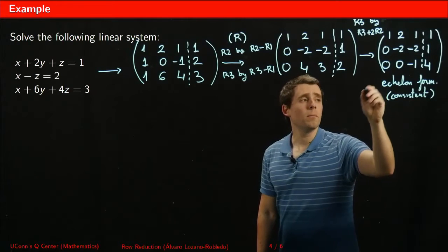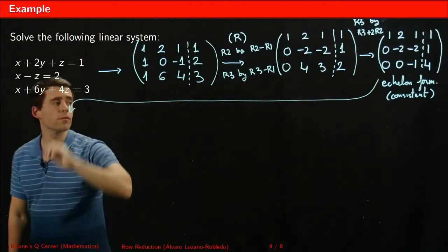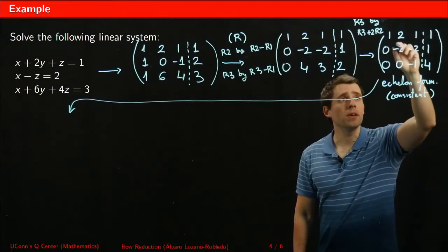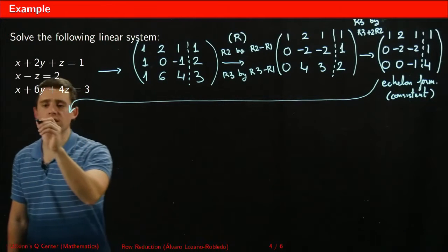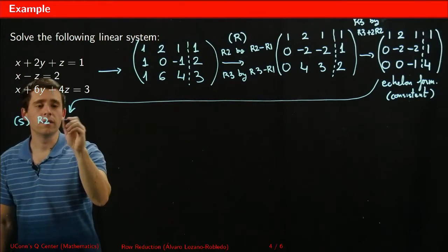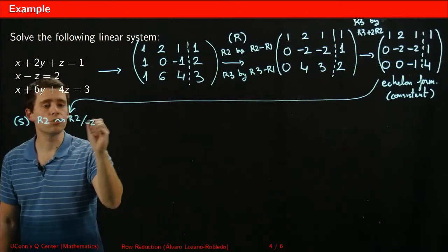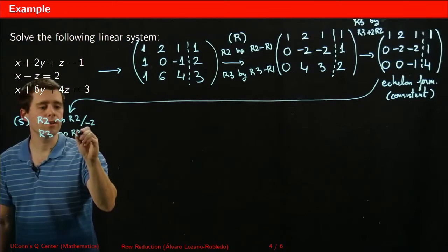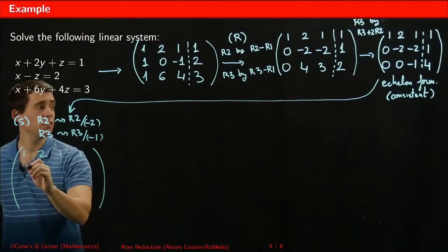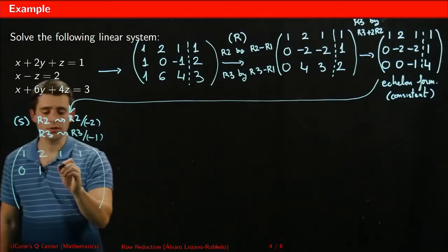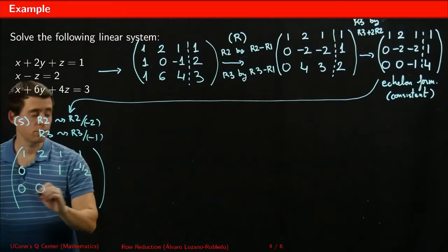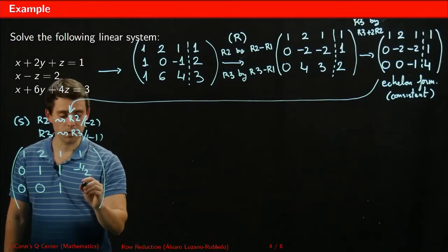Now we bring the echelon form to reduced echelon form. The pivot positions must be 1, so I scale. I'll scale the second row by dividing by minus 2, and the third row by dividing by minus 1. That gives: row 1 is 1, 2, 1, 1; row 2 becomes 0, 1, 1, minus one-half; and row 3 becomes 0, 0, 1, minus 4.